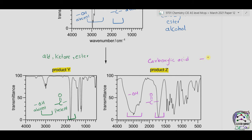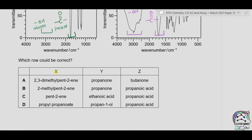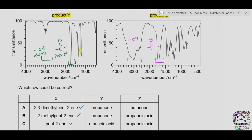Carboxylic acid has both C=O and OH groups. According to the infrared spectra of X, it is neither aldehyde, ketone, carboxylic acid, nor ester, so X could be an alkene — such as pentene. In product Y, carbonyl is present while OH is absent, so it is not ethanoic acid; it could be a ketone, that is propanone. In product Z, both carbonyl and OH are present, confirming it is a carboxylic acid — propanoic acid. The correct answer is therefore B.